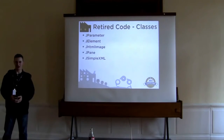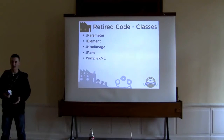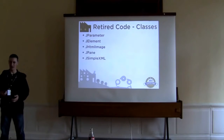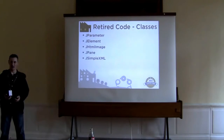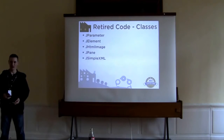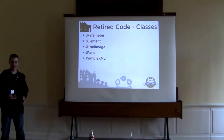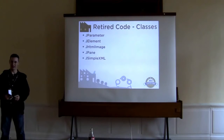Getting into the retired code: we've only removed five classes total from the platform. JParameter and JElement are the big ones. In the CMS, the JElement children have been pulled out in the 3.0 branch. JHTMLImage was just a little utility class — both its methods were replaced by another image method, so we removed the empty class. JPain is being replaced by JHTMLSliders and tabs. And JSimpleXML — we're working to break away from our Joomla-extended instances of SimpleXML objects.